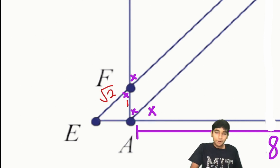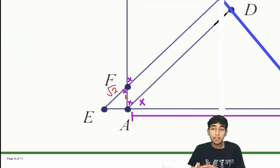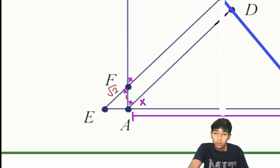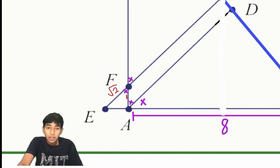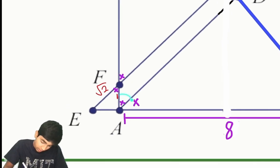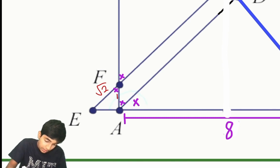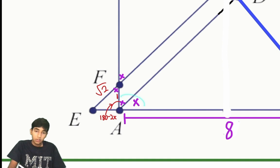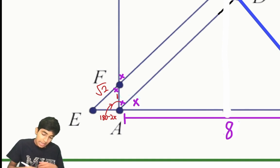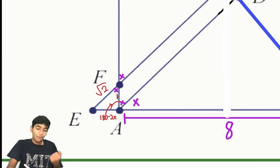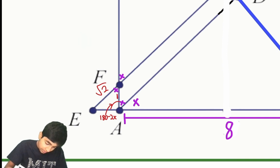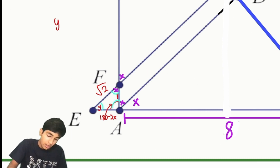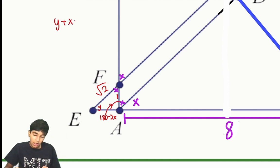But look — this is a straight line, so we can use supplementary angles. The reason we're angle-chasing is because angle conditions tell us which triangles are similar, and similar triangles give us lots of valuable information. This angle here is 2x, and because the total on a straight line is 180, this part is 180 minus 2x. Now, this is a triangle with angle sum 180, so let's call this angle y.